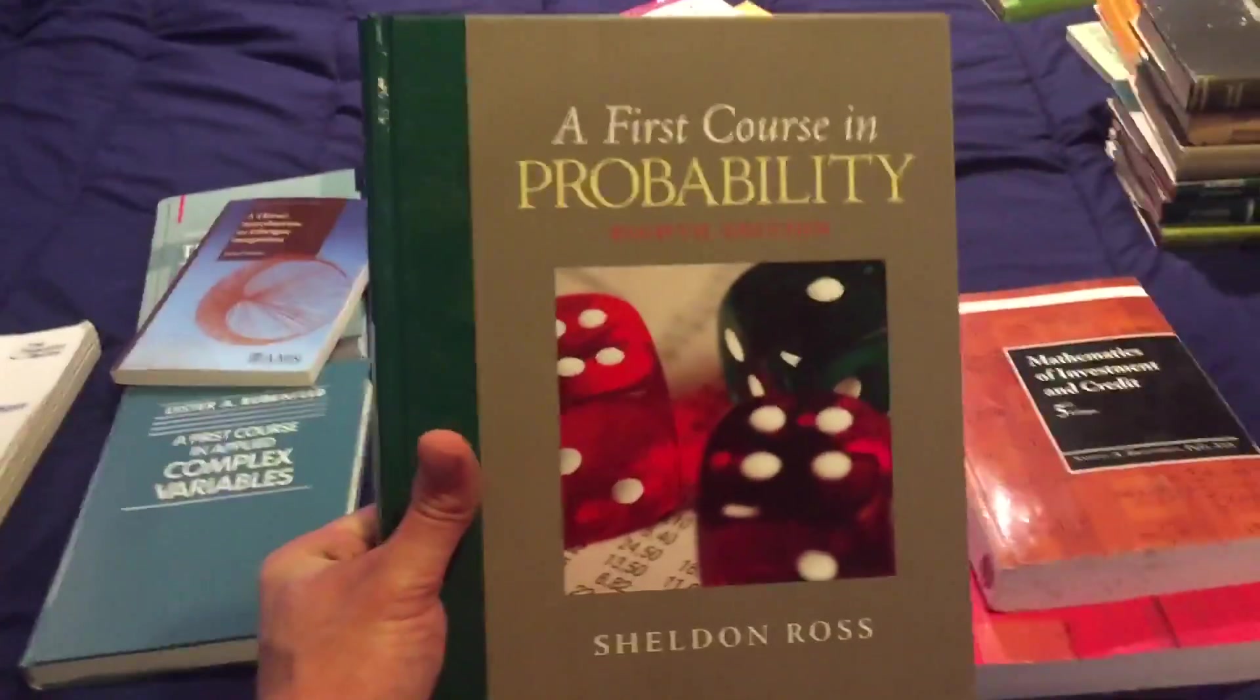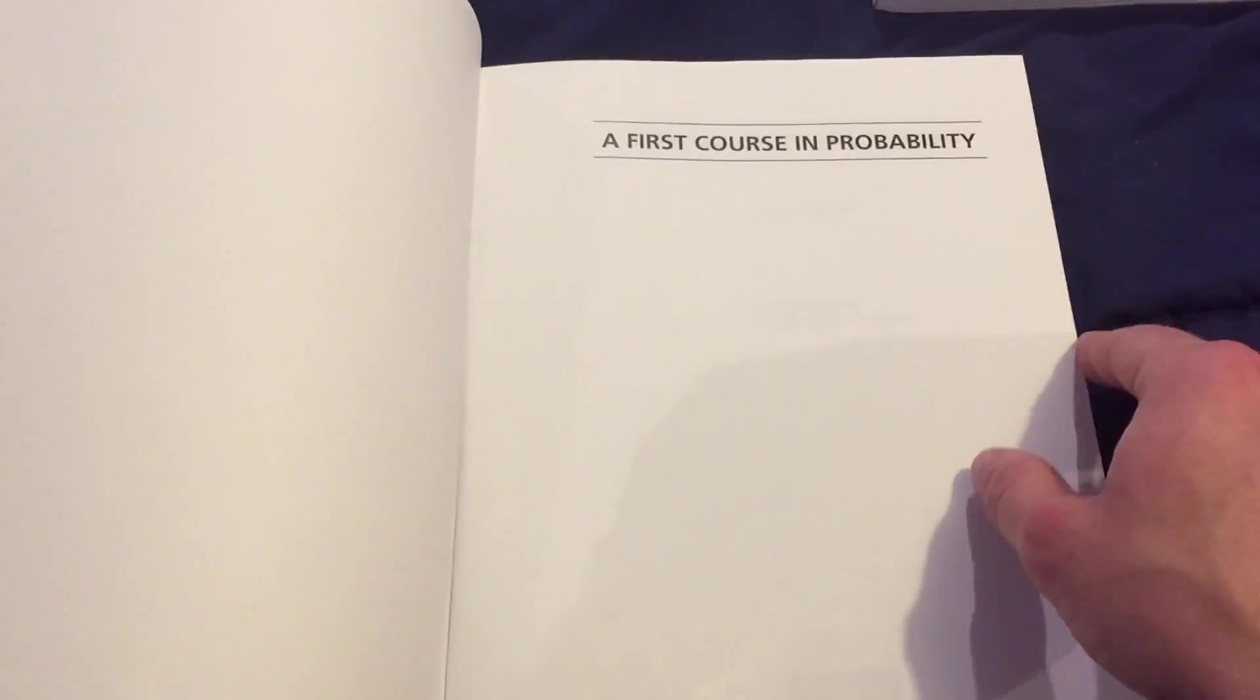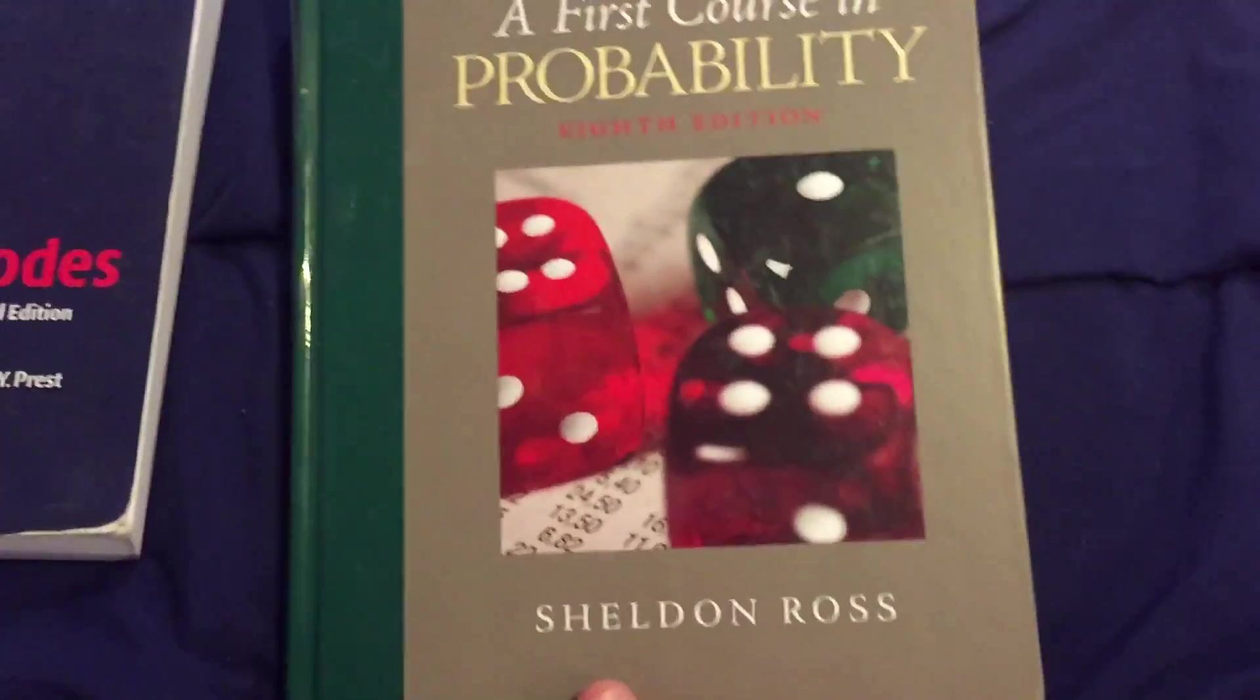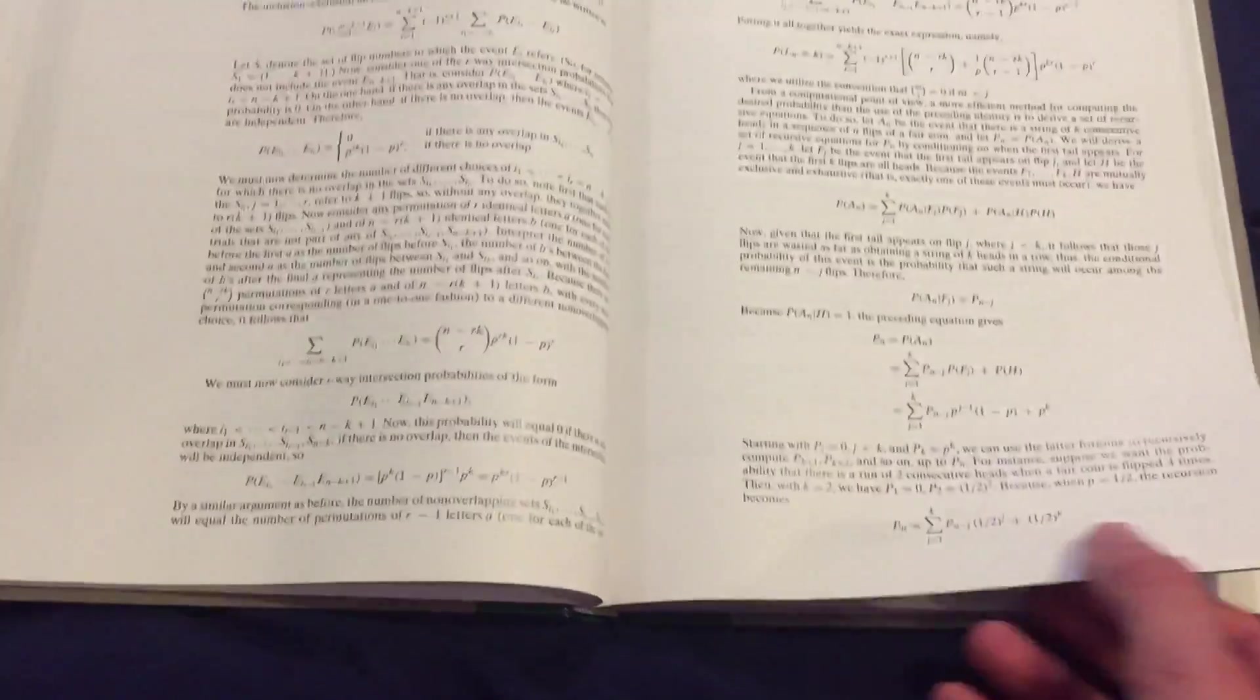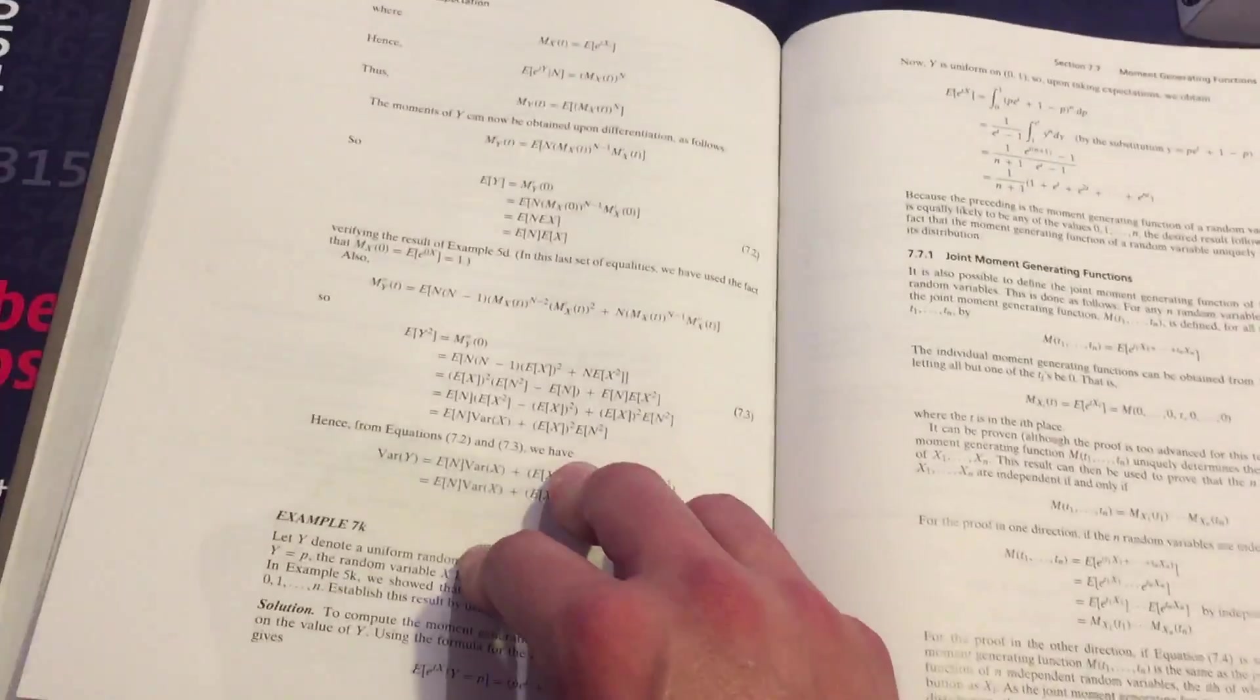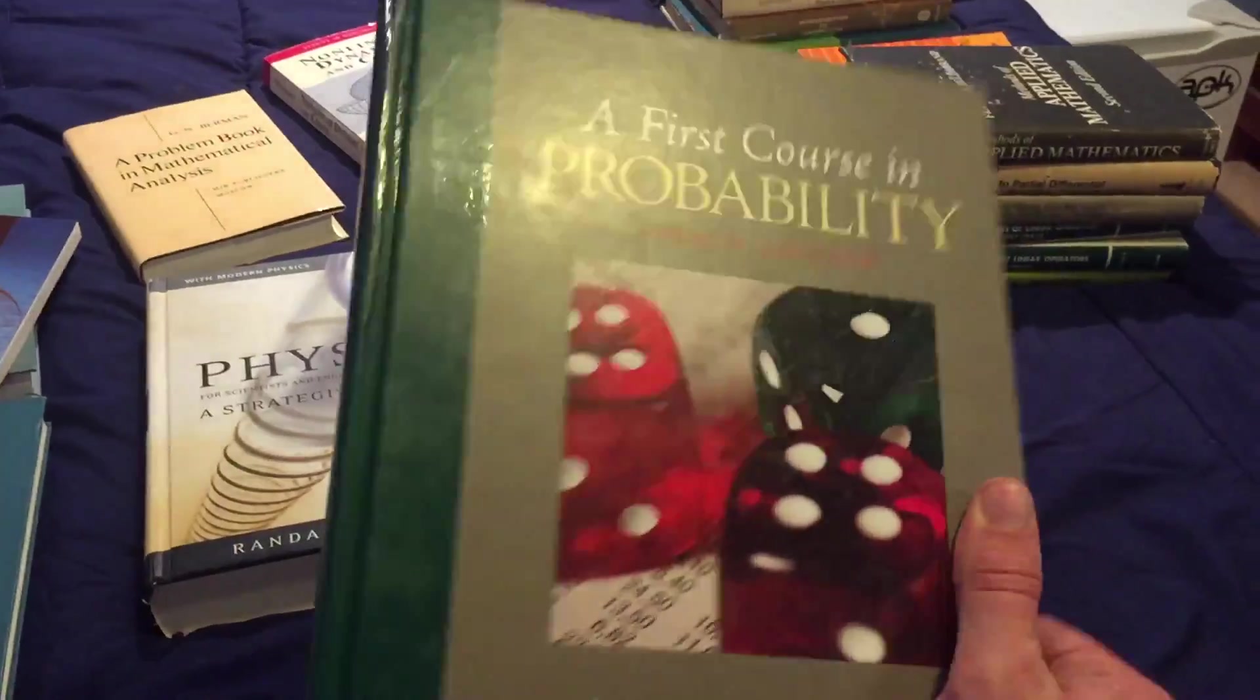And then this was the book that I used for my actual probability theory class at University Park Penn State, and I love this book. If you're interested in learning probability or you're taking a probability class, I definitely recommend this: A First Course in Probability. I have the eighth edition by Sheldon Ross. This pretty much has everything you need. It's got lots of examples, lots of problems, covers all the main things, everything from basic set theory, basic probability, all the way through random variables, all the distributions you need to know, all the way up through central limit theorem. Yeah, I really really liked this book. This was fantastic, definitely great for like a third year college junior if you're a math major.